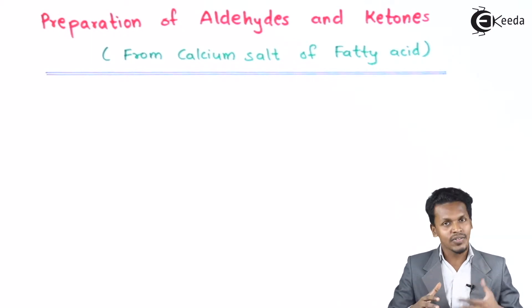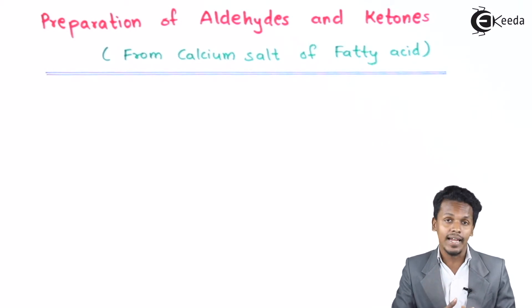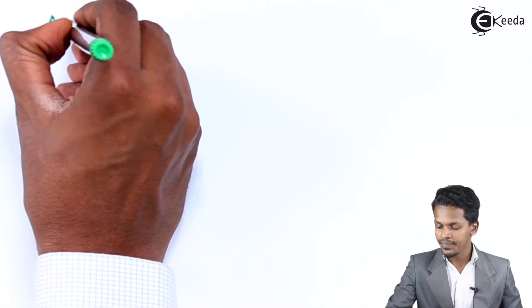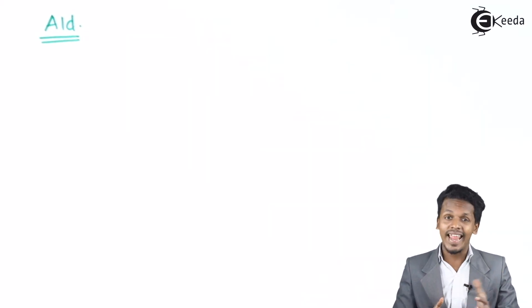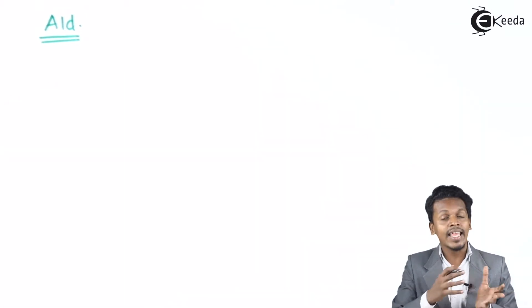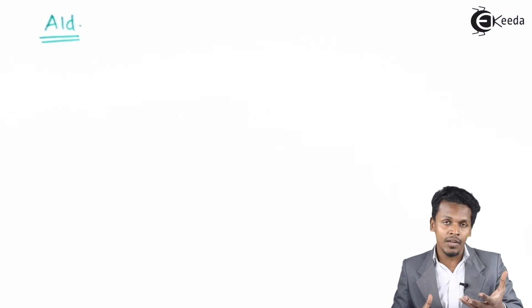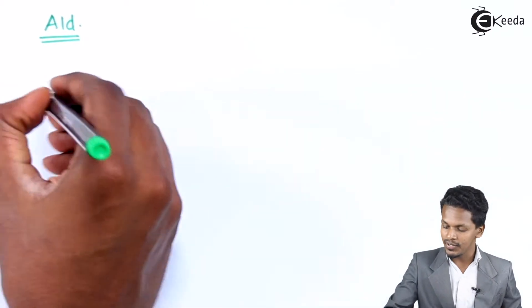So how does the reaction proceed? Let me discuss about the first one — how we can prepare an aldehyde by the dry distillation of calcium salt of fatty acid. To prepare an aldehyde we have to consider the calcium salt of fatty acid, and especially calcium formate. We are going to discuss about the reaction where calcium formate is reacted with another calcium carboxylate so as to form an aldehyde. I am representing here the general reaction.